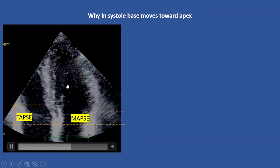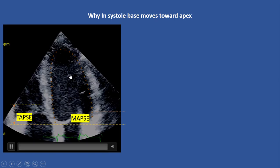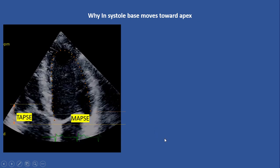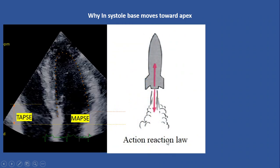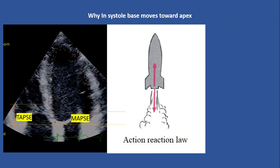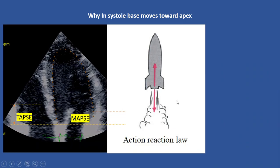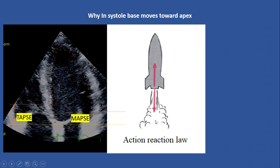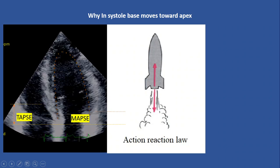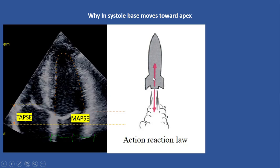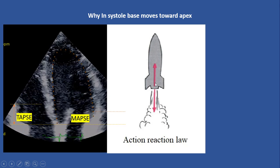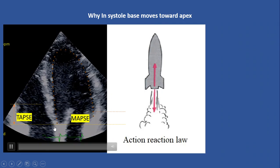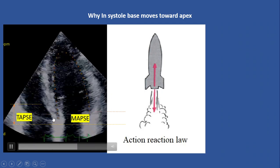Why doesn't the apex move inward, and only the base of the heart moves forward toward the apex? The answer is related to Newton's third law — the action and reaction law. For example, here we have a rocket. When the engine burns the fuel, the gas comes out with force. Based on this law, the force of gas is applied in exactly the opposite direction to the engine, and that is the reason the rocket moves forward.